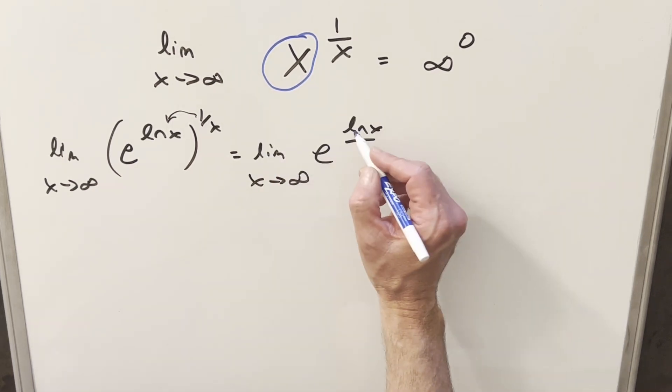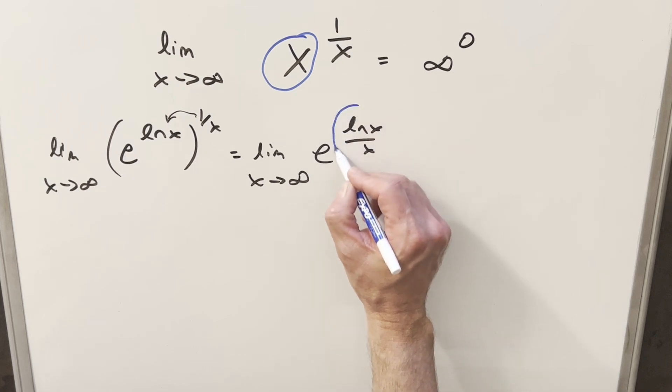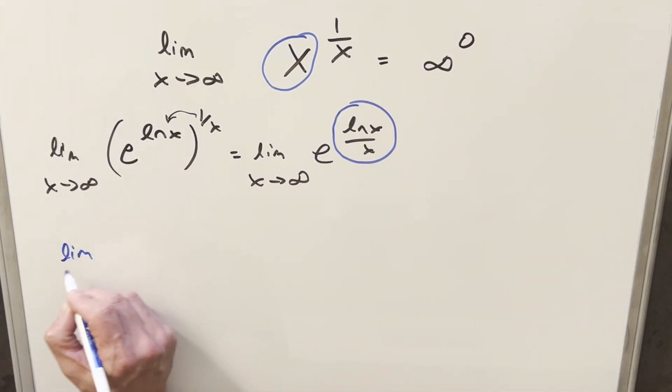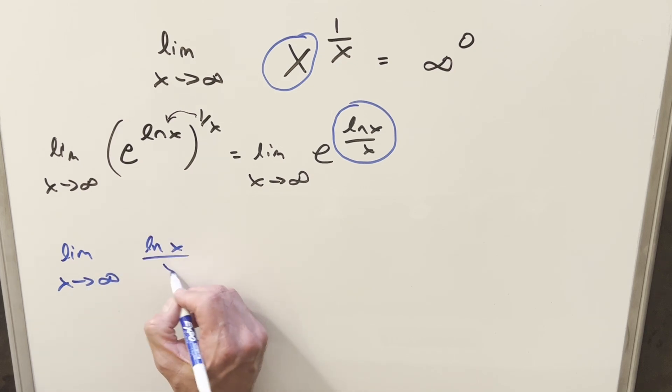But what that allows me to do is bring the limit into the exponent. So what I can do is evaluate this limit of just ln x over x. We'll come down here and look at the limit for ln x over x. And now if we try to evaluate this at infinity,